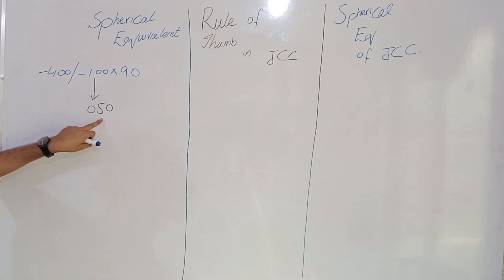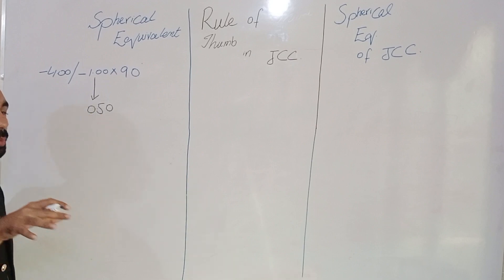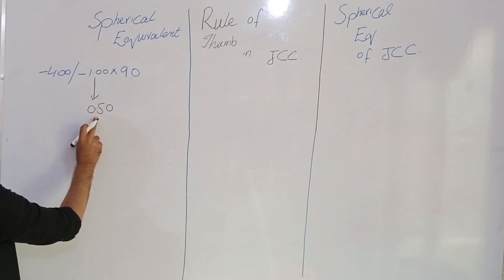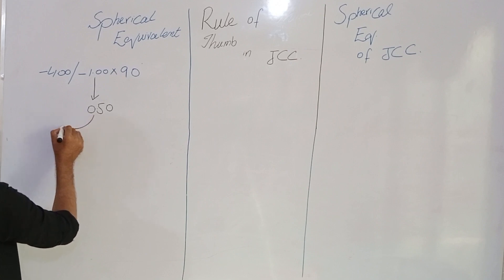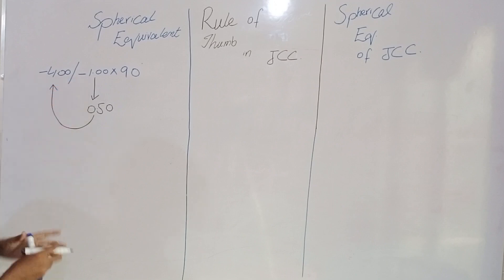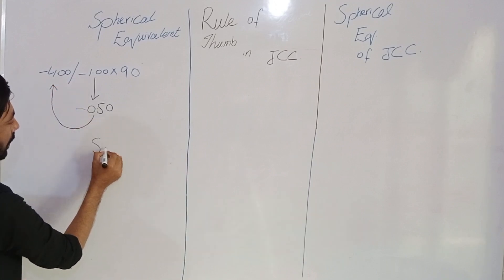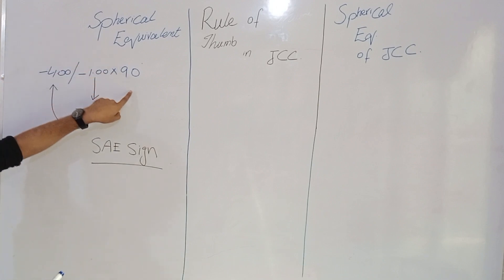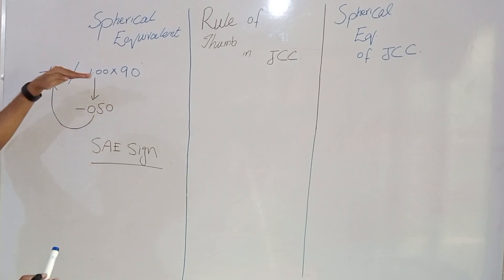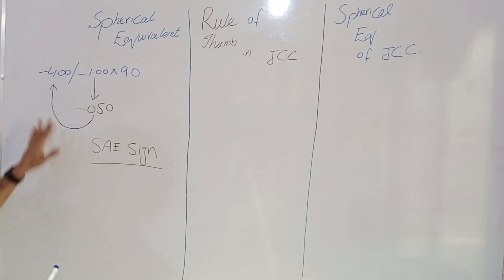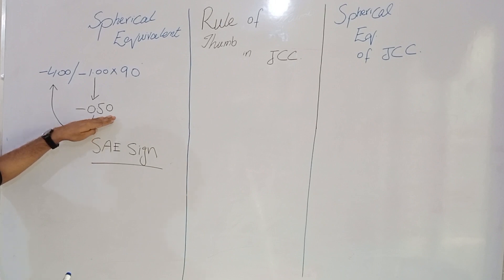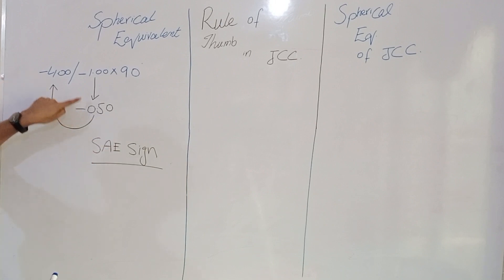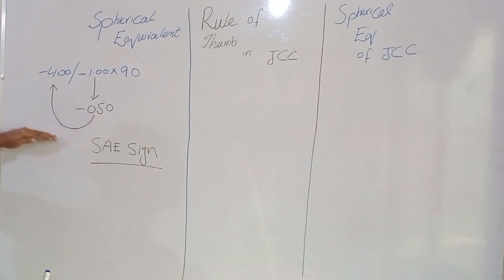We will add this half of the cylinder into the spherical correction algebraically. The key point where students always make mistakes: when taking spherical equivalent in a normal prescription, you take half of the cylinder and add it to the spherical correction with the same sign. The cylinder sign is minus, so we apply a minus sign to the half of the cylinder.